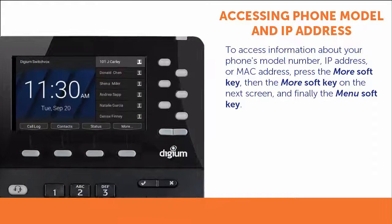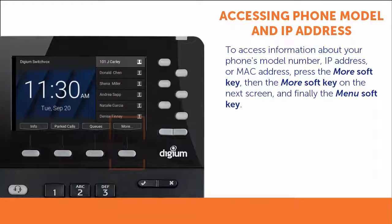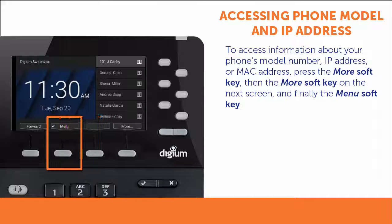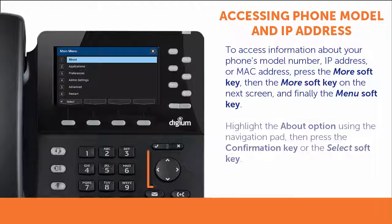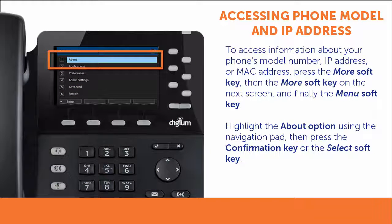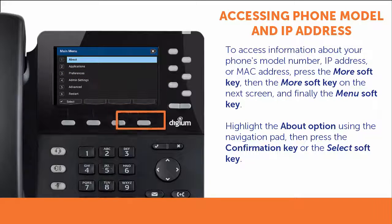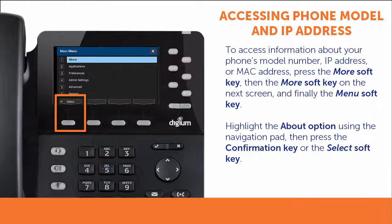From the idle screen, press the More Soft Key and then press the More Soft Key once again. Then press the Menu Soft Key. Use the navigation pad to highlight the About option and select using either the phone's confirmation key or the Select Soft Key.